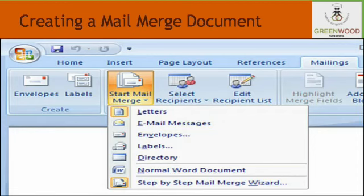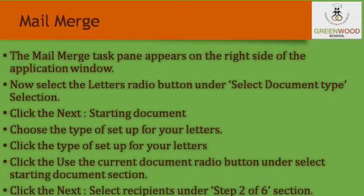How to create a Mail Merge document: first, open Microsoft Word. In the Mailings tab, go to the Start Mail Merge group. Click the Start Mail Merge drop-down menu and select the Step by Step Mail Merge Wizard option. The Mail Merge task pane appears on the right side of the application window. Now select the Letters radio button under the Select Document Type section.